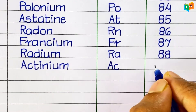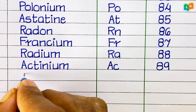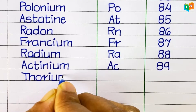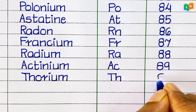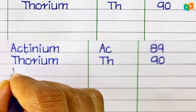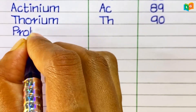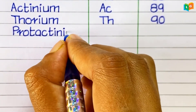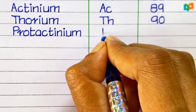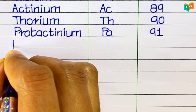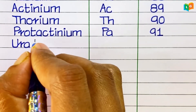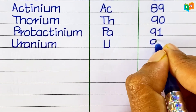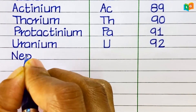Actinium, symbol Ac, atomic number 89. Thorium, symbol Th, atomic number 90. Protactinium, symbol Pa, atomic number 91. Uranium, symbol U, atomic number 92.